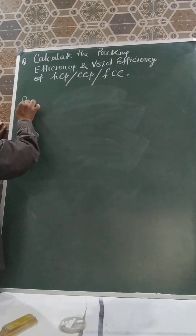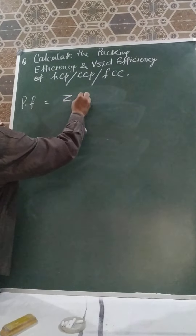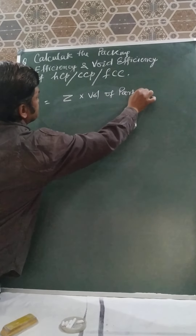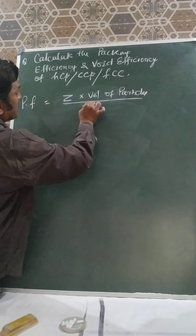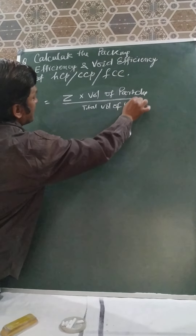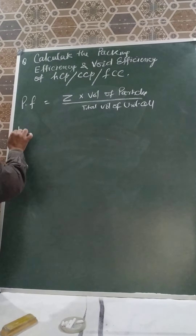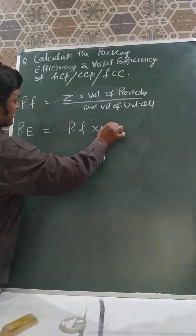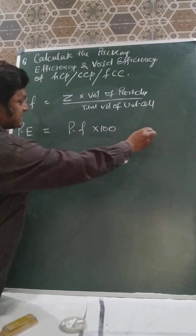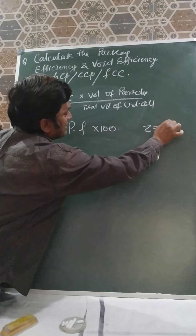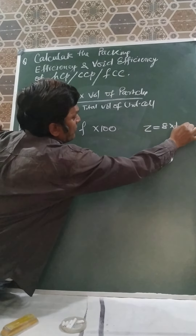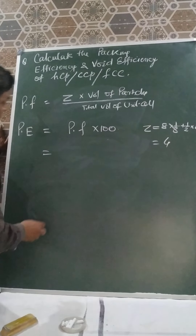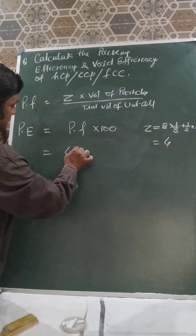Now, packing fraction is equal to Z into volume occupied by all particles divided by the total volume of the unit cell. Packing efficiency is equal to packing fraction into 100. For FCC, Z is equal to 8 corners each contributing 1/8, plus 1/2 for each of 6 face-center particles, giving Z equals 1 plus 3 equals 4.